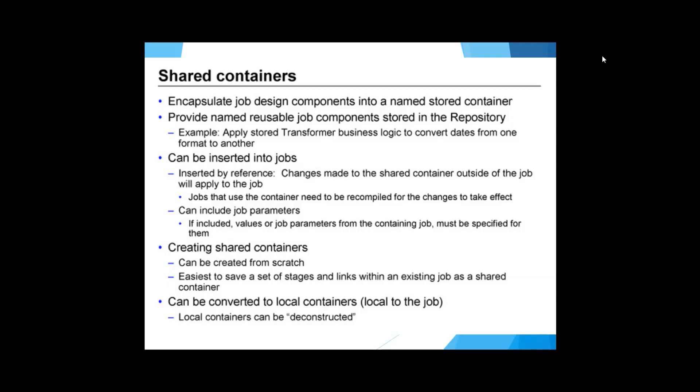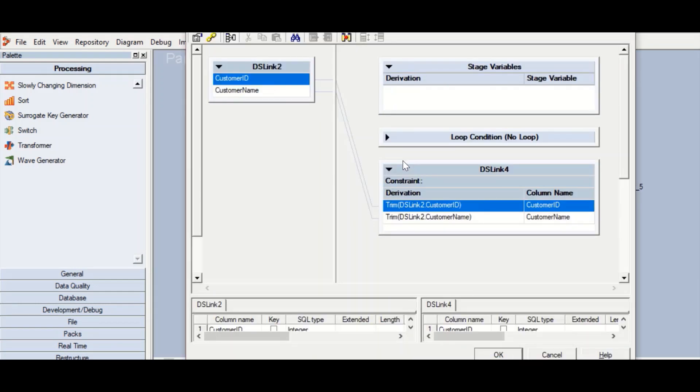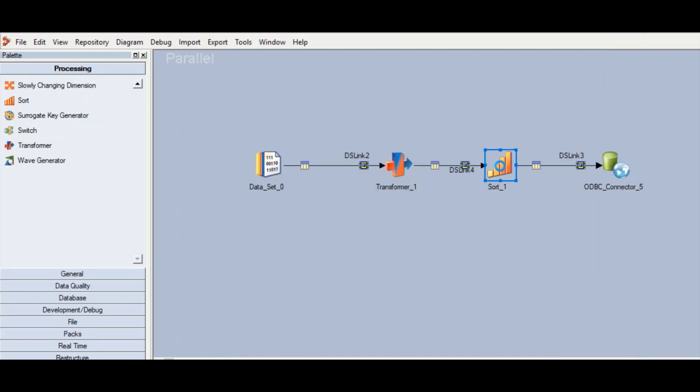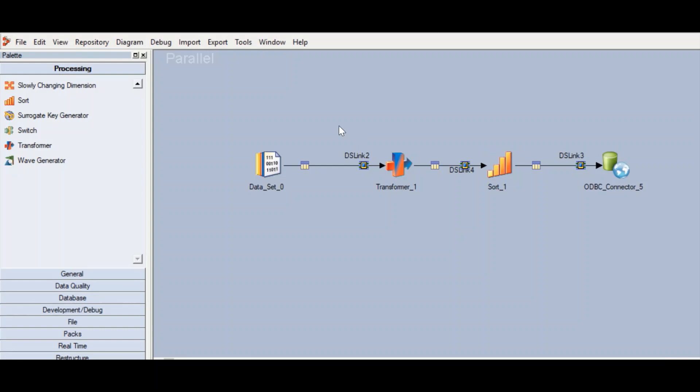In this job we have a dataset as a source and a database table as a target. Then we have the transformer stage in which we have two columns: customer ID and customer name, and we are simply trimming those columns. In the sort stage, we are sorting on the customer ID, so simple logic.